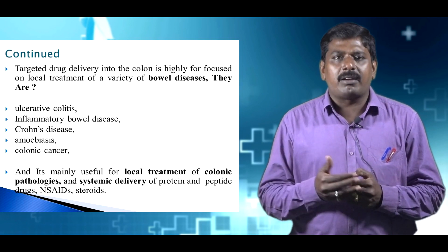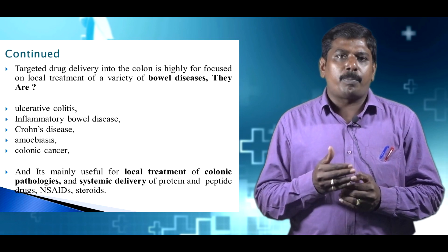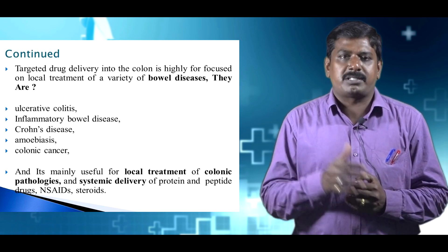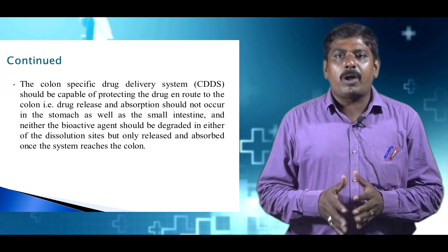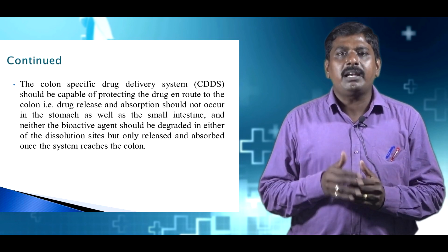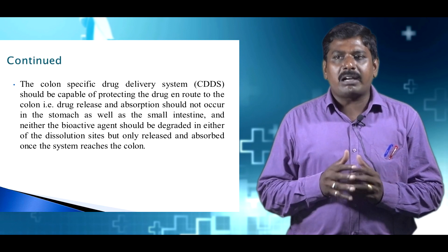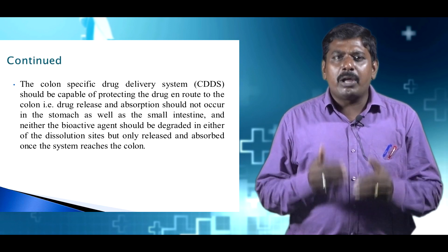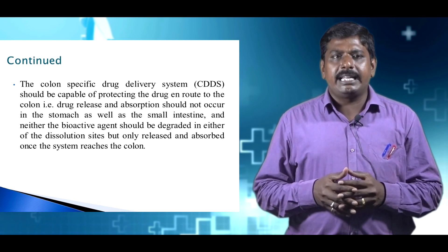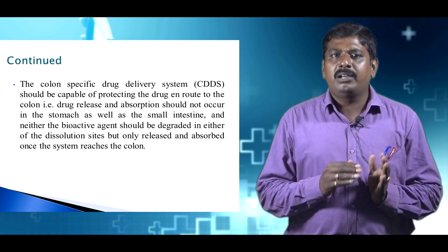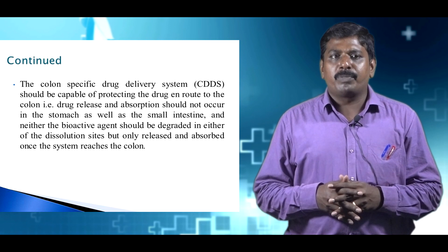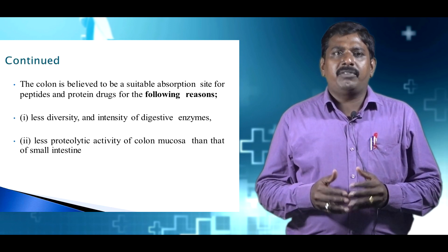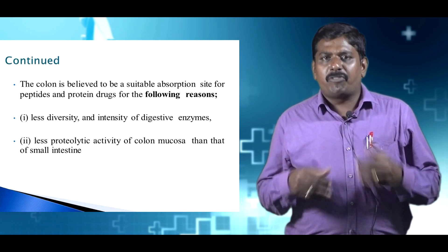Local treatment of colonic pathologies refers to the internal and external parts of colonic disease. Systemic delivery targets a particular site or organ in the human body. The colon specific drug delivery system should be capable of protecting the drug as it enters the colon — drug release and absorption should not occur in the stomach or small intestine. The bioactive agent should not be degraded at those sites but only released and absorbed once the system reaches the colon.